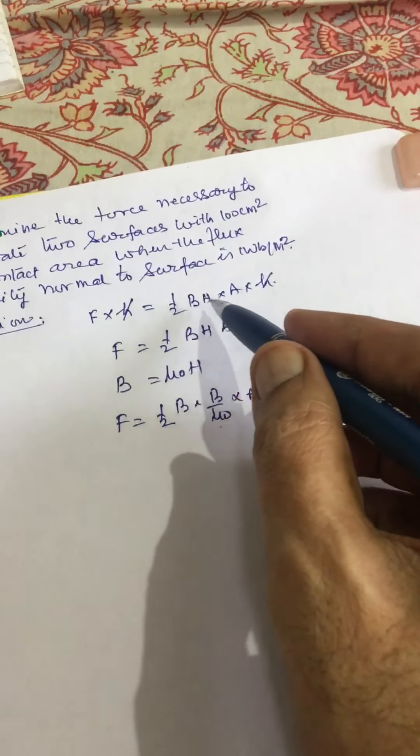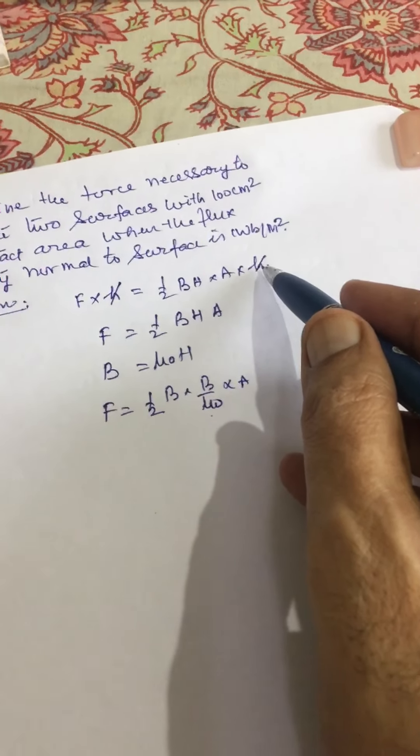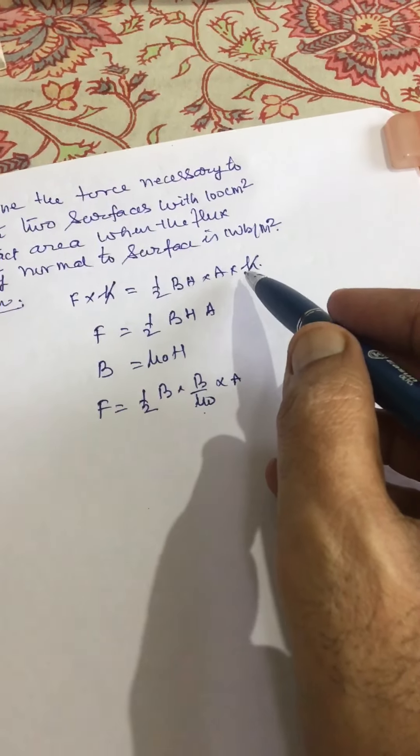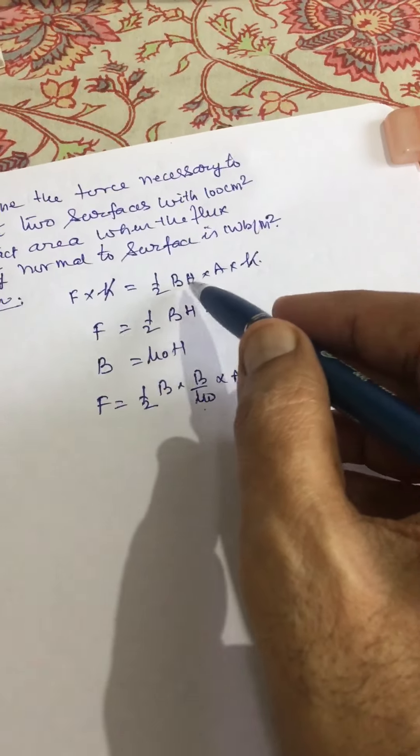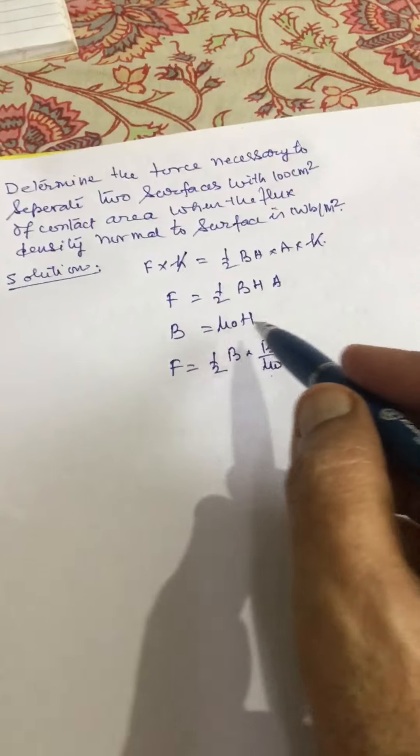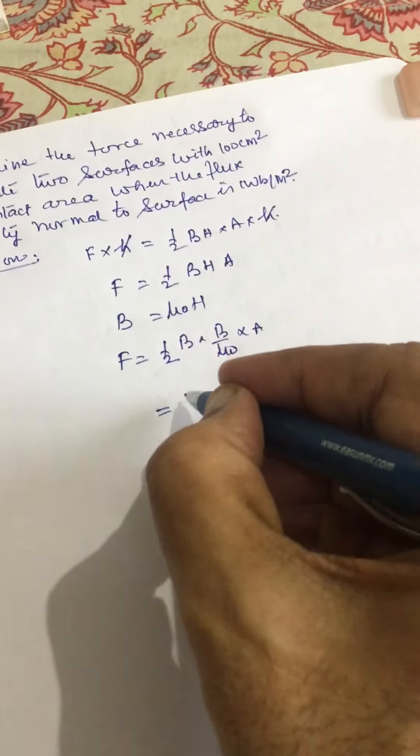So this is joule per meter cube, and this is area. A into H gives the total energy, and this gives the total energy. So by equating them we get the expression for force. Now putting value of this.